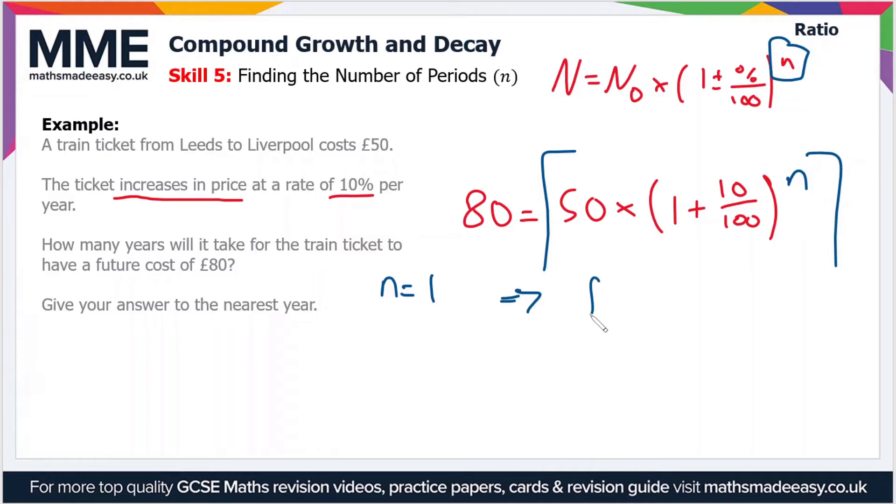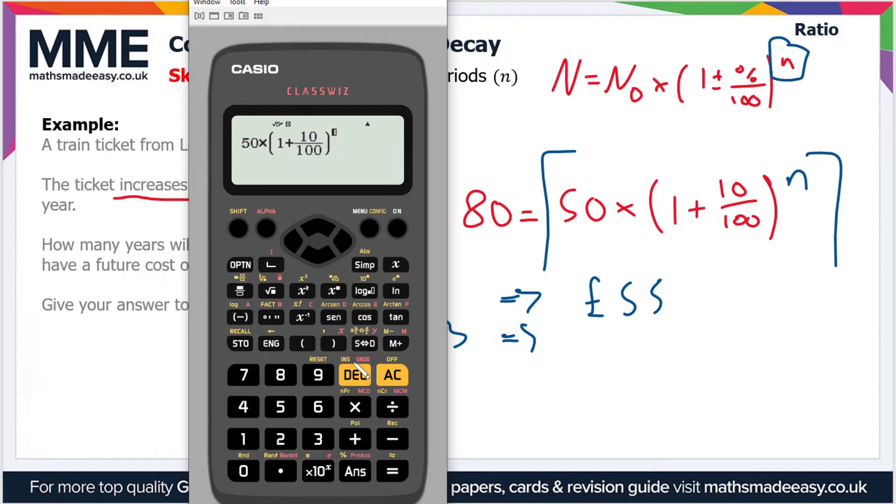So that's the cost of £55 after one year. So after one year we can say that the cost is £55. Now clearly that's a way off, so what if we try n equals 3? Well, what does that give us? So let's just delete the one on the end, change it to a 3. That gives us £66.55, so we're not there yet.